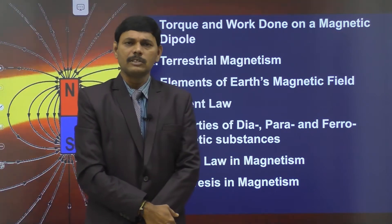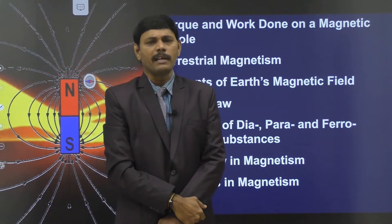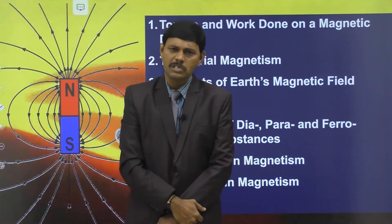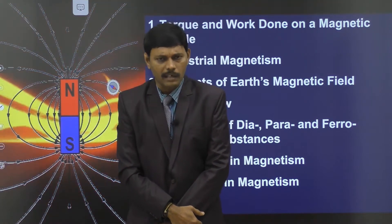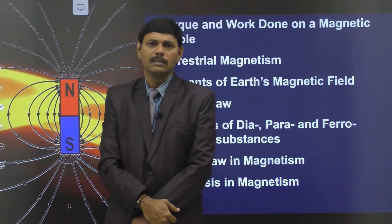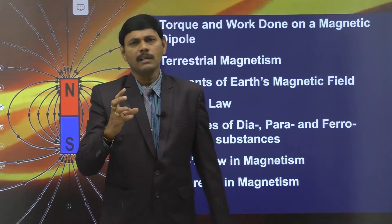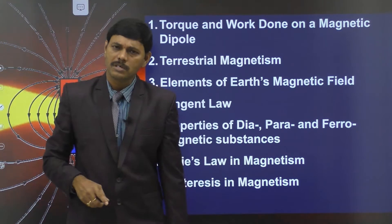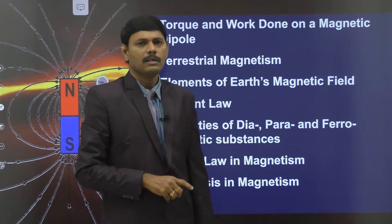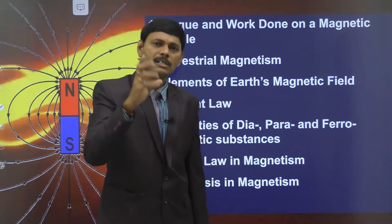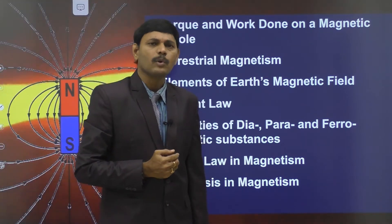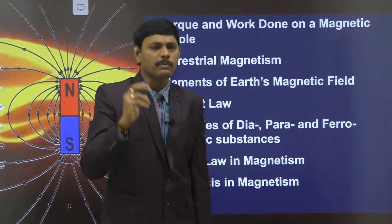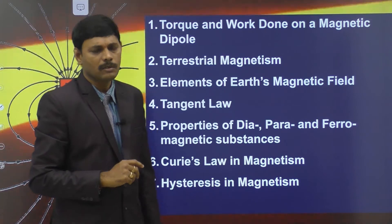Next is the tangent law. Magnetic materials depend upon magnetic strength and are classified into three categories: diamagnetic substances, paramagnetic substances, and ferromagnetic substances. We also discuss Curie's law of magnetism and the hysteresis loop. In the recent 2020 JEE Main exams, questions were given on magnetism and matter — both numerical and theory — based on the hysteresis loop. That is why this is a very important chapter from an objective point of view.